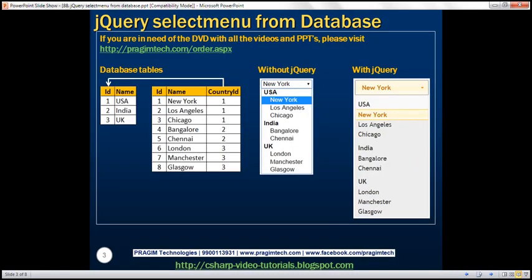Here is what we want to achieve. We're going to have two database tables. The first table contains countries data — at the moment it has three countries. The second table contains cities data. The first three cities belong to country ID 1, which is USA. Cities 4 and 5 belong to country ID 2, which is India. And the last three cities belong to country ID 3, which is United Kingdom.